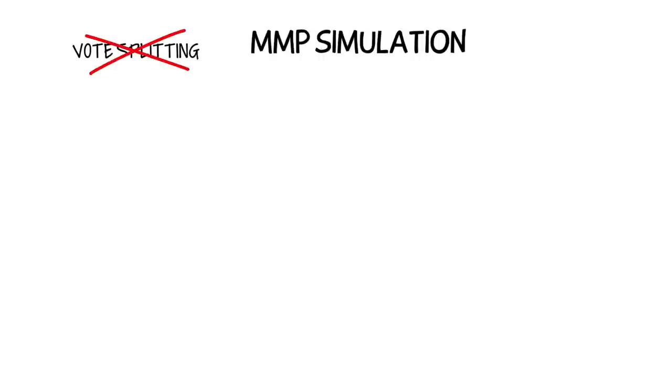This simulation is based on results from the 2011 election. Now, keep in mind that when you change the voting system, you also change the incentives that affect the kinds of decisions that voters might make. For instance, we know that when every vote counts, voters won't have to worry about splitting the vote or casting a strategic vote. Thus, we should expect that support for different parties might change.